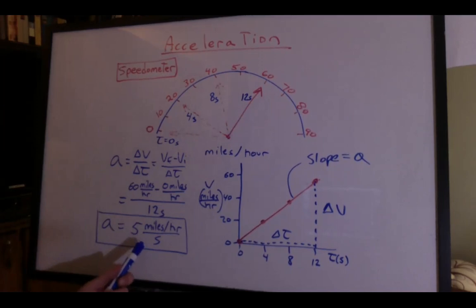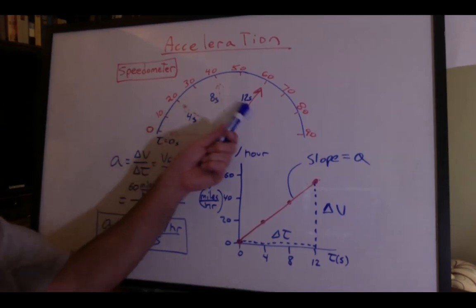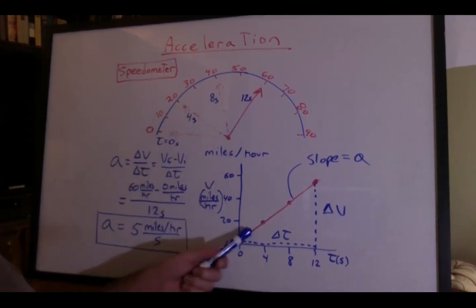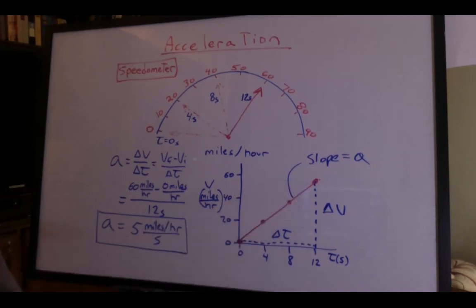And so we could say, legitimately, that we're gaining 5 miles per hour per second. And if we did the math for a smaller interval, we would still get the same acceleration. You could see that the slope is the same going all the way up this graph.